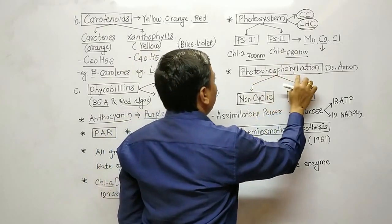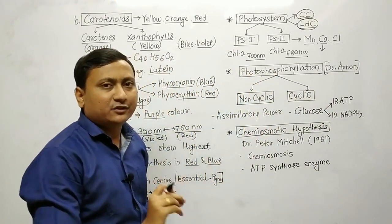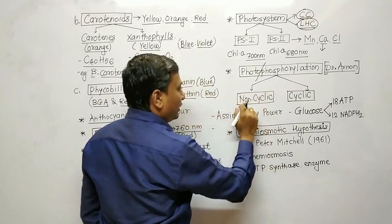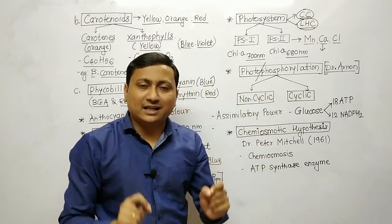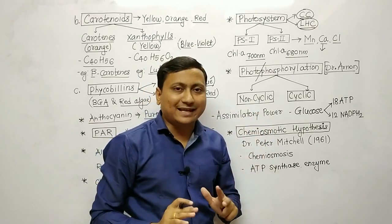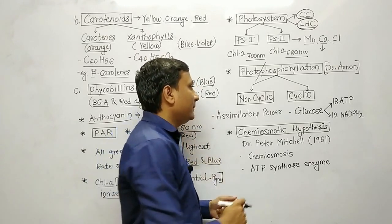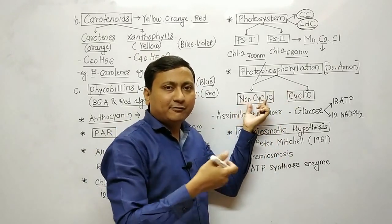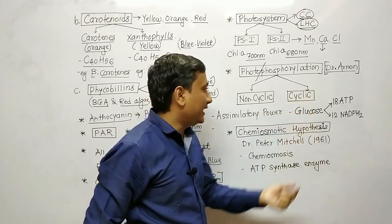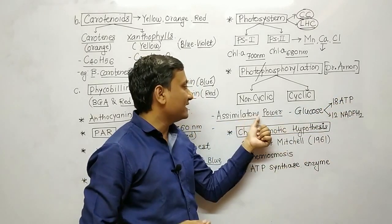The next topic is photo-phosphorylation. Photo-phosphorylation is the formation of ATP using light energy in the presence of chlorophyll A. There are two types: cyclic and non-cyclic. In cyclic, there is a cyclic flow of electrons. An important point about non-cyclic: the formation of ATP and NADH2 is known as assimilatory power, also called assimilation.